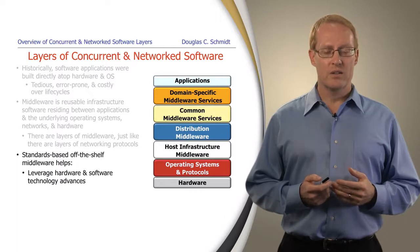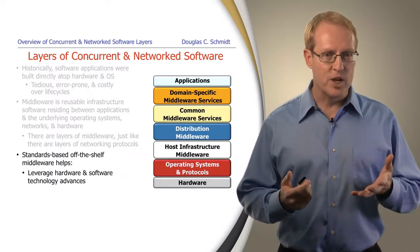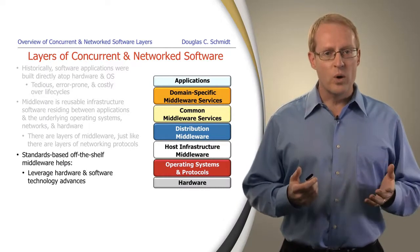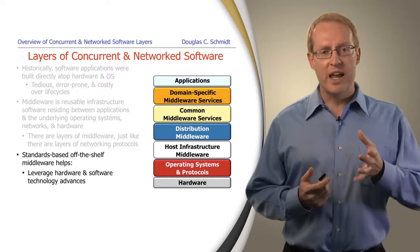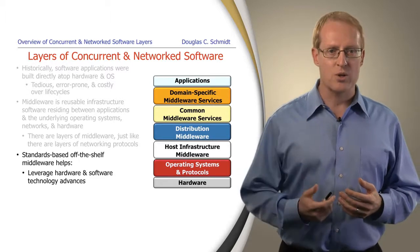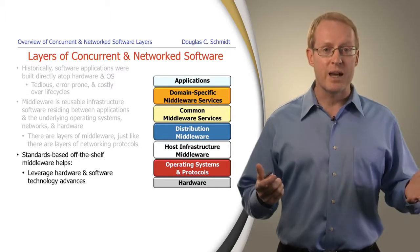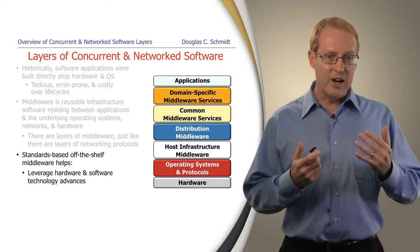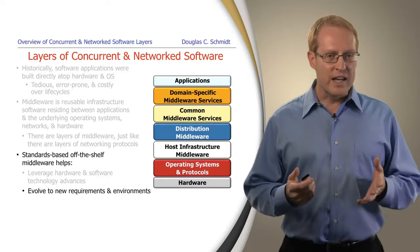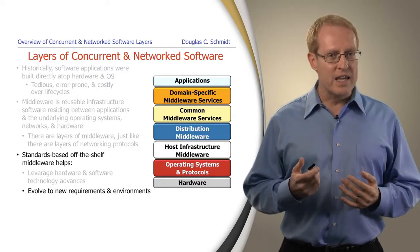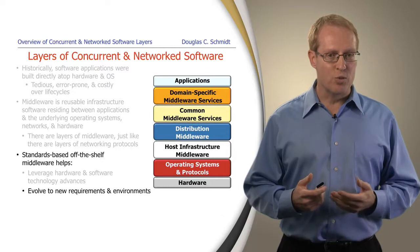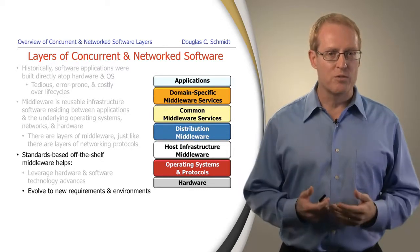Standards-based middleware that is packaged in commercial off-the-shelf solutions helps to do a number of important things for concurrent and network software. One thing it does is it helps to leverage advances in hardware and software without breaking the applications. You can have new processors, new network protocols, new programming languages come along, and the software at the higher layers is often unaffected. It also makes it easier to evolve your applications to handle new requirements and new environments, such as running on a new operating system.